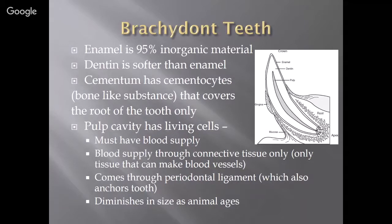Different animals and species have different teeth. Brachydont teeth are teeth of omnivores or carnivores. The enamel is 95% inorganic material and is the hardest substance in your body. Dentin is softer than enamel, so the enamel has to cover the dentin to protect the tooth. There is also cementum, which has cementocytes that create a bone-like substance, and it covers only the root of the tooth — that part within the gum tissue and bone.